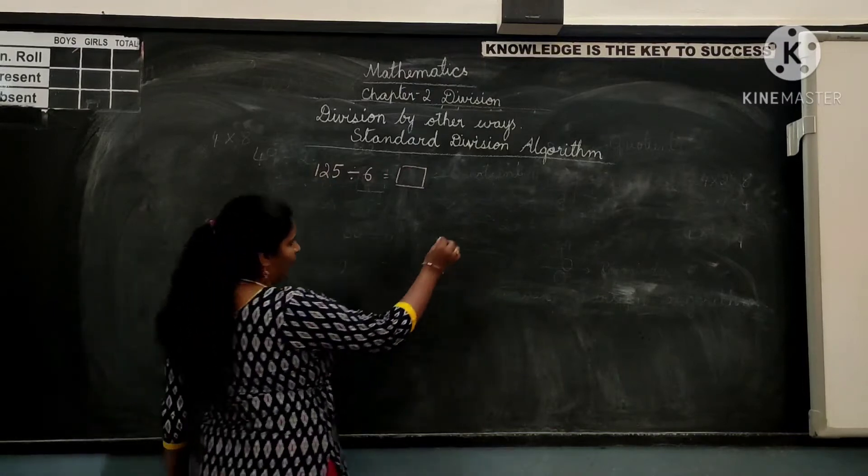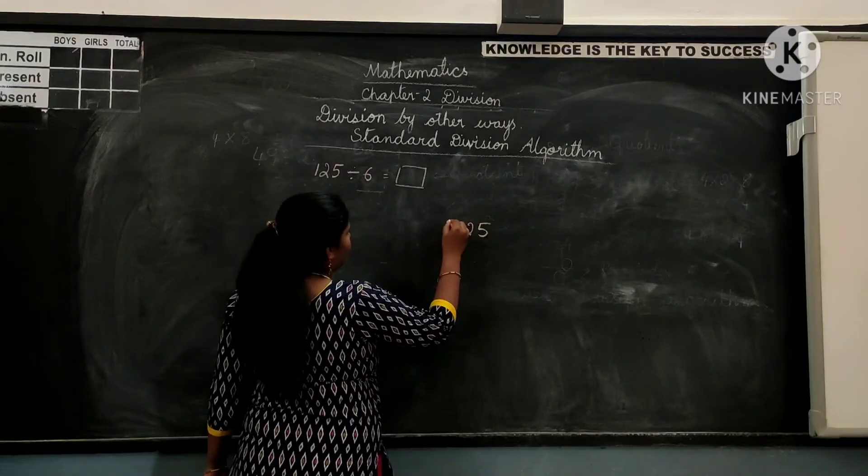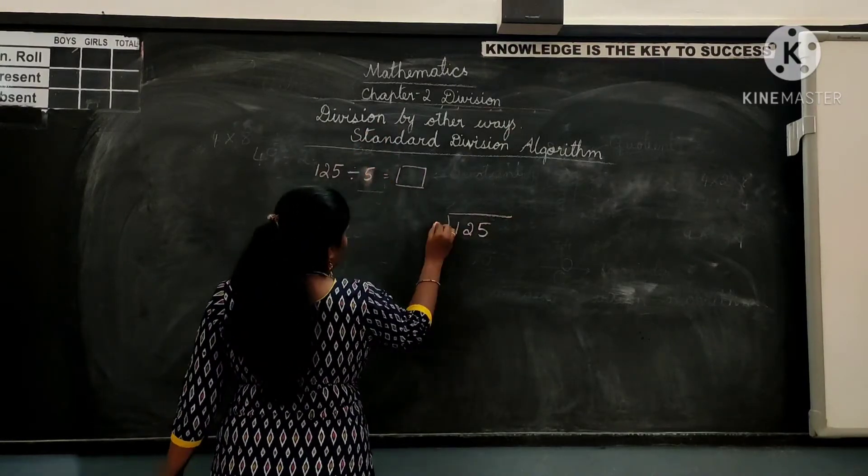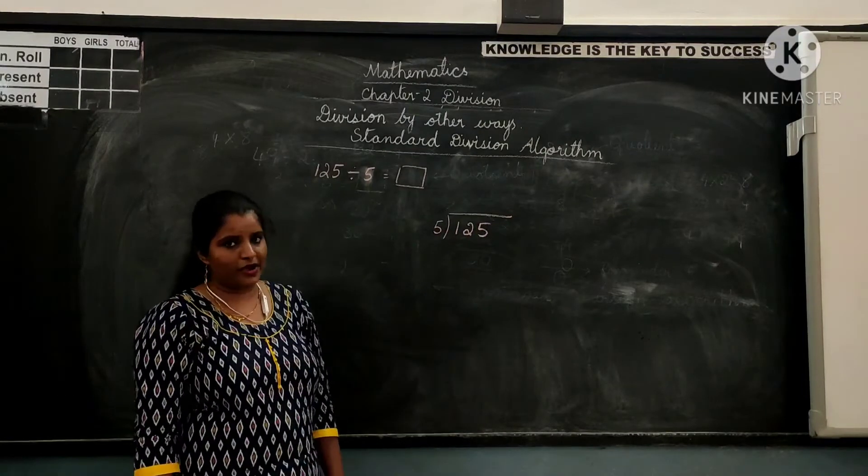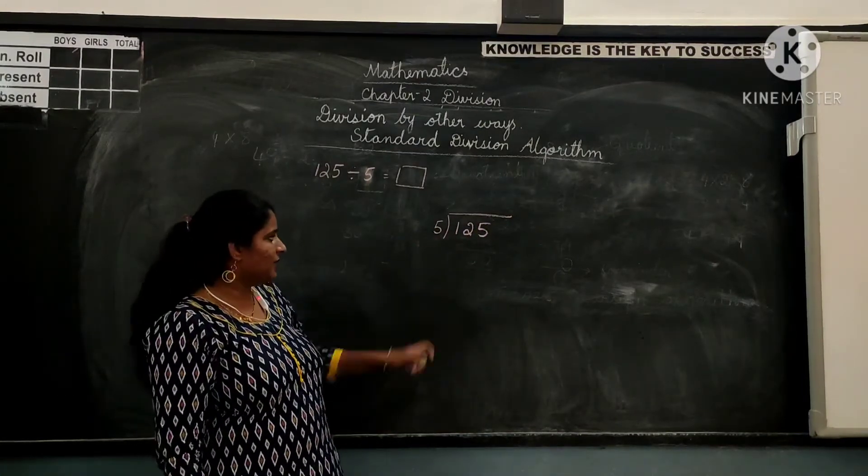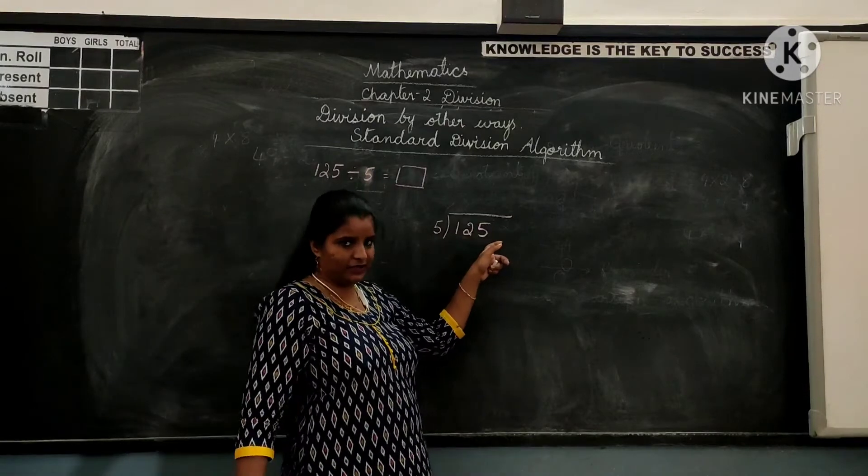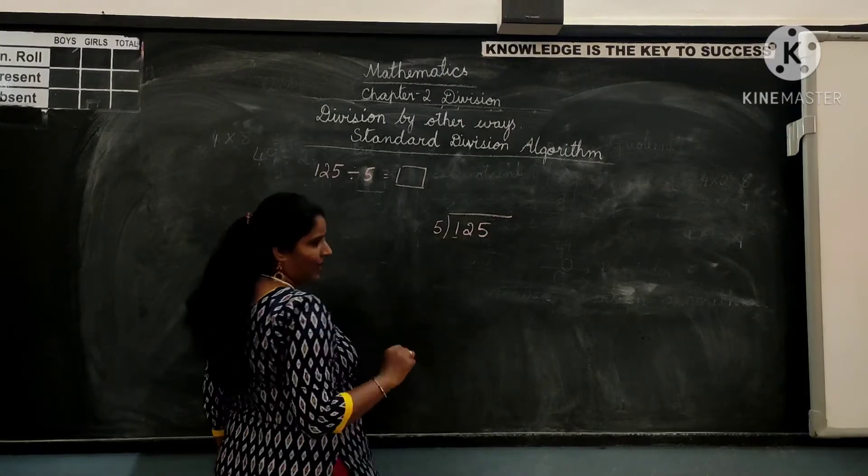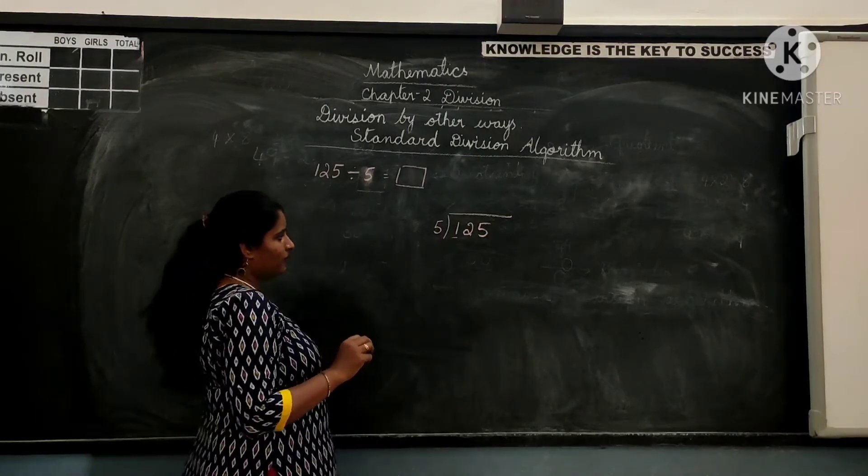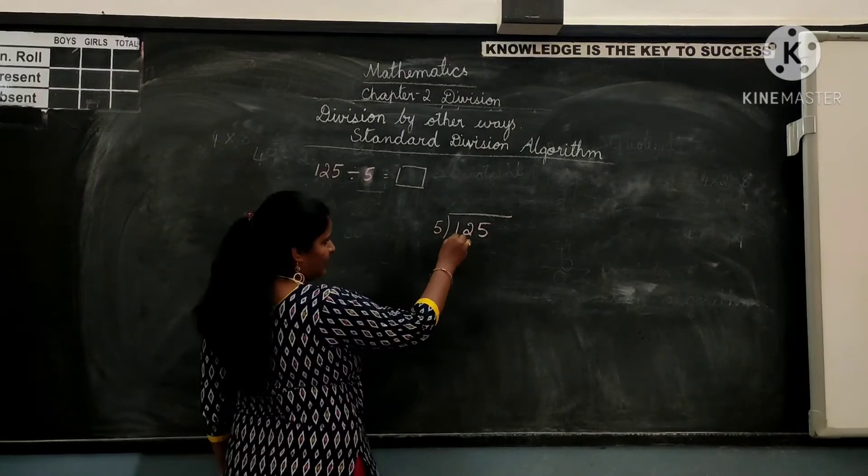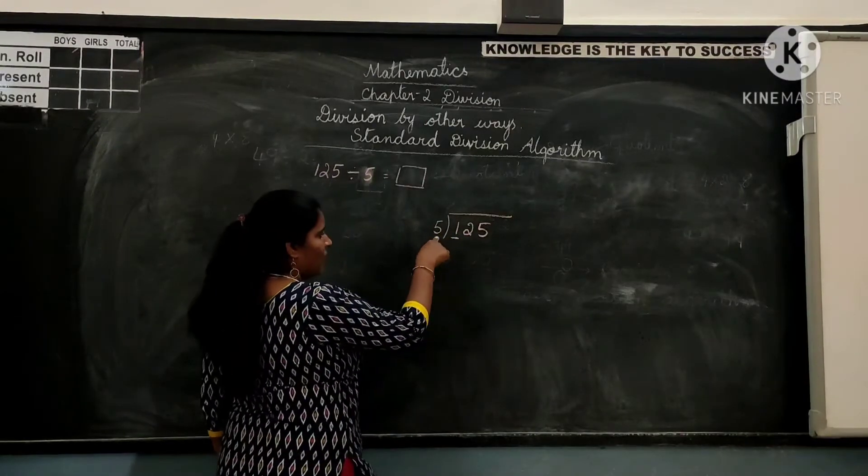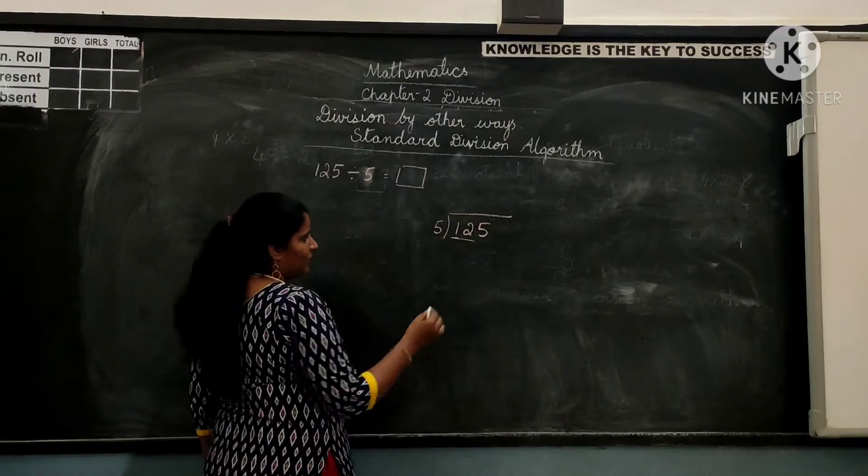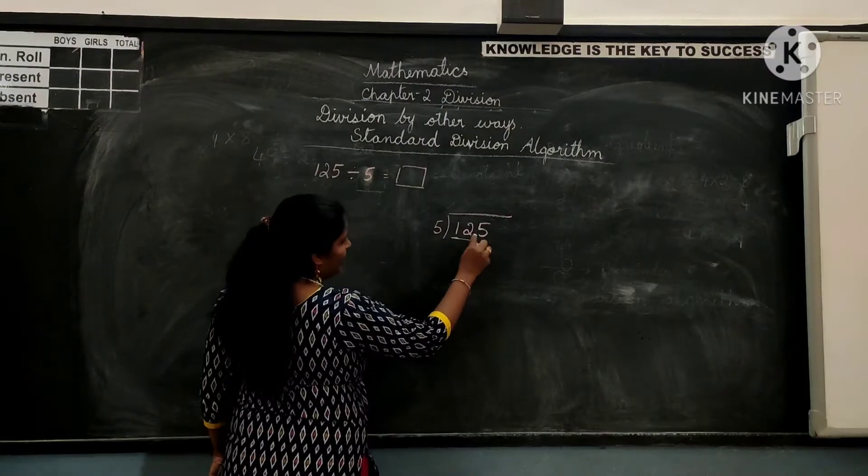Let us solve another problem. Divide 125 by 5. You can see here 125 is the dividend, 5 is the divisor. Now we know that we have to take one number at a time. From the digit in the highest place of the dividend. One is lesser than the divisor. So you have to take 2 digits from left, making it 12.